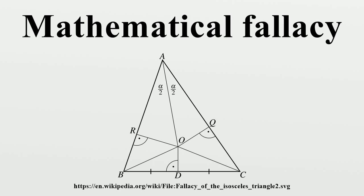Fallacy of the isosceles triangle: The fallacy of the isosceles triangle purports to show that every triangle is isosceles, meaning that two sides of the triangle are congruent. This fallacy has been attributed to Lewis Carroll. Given a triangle ABC, prove that AB equals AC.